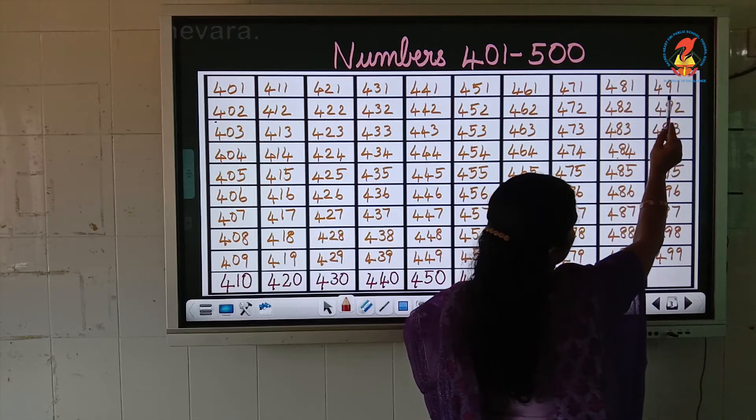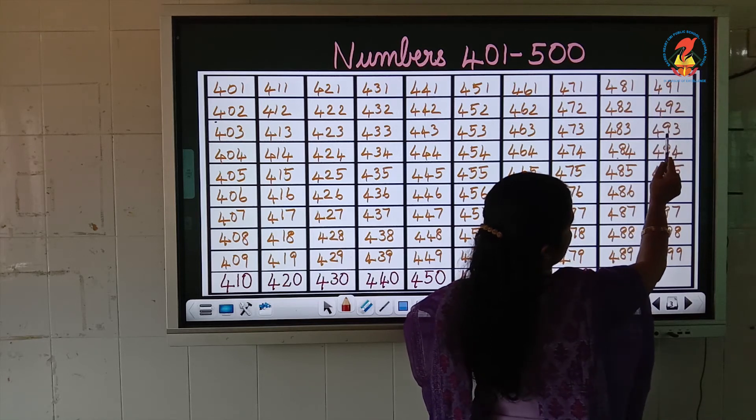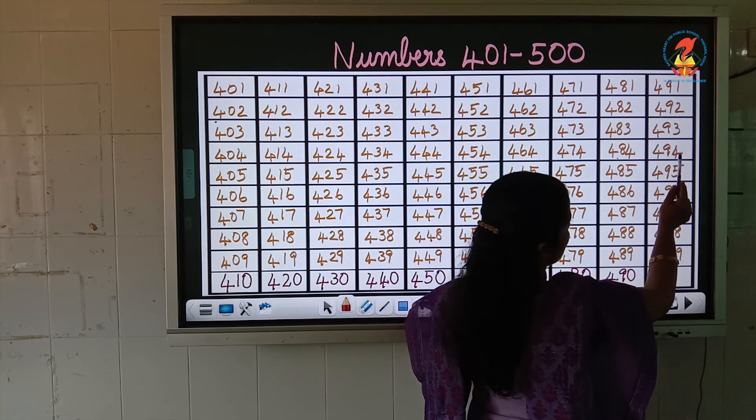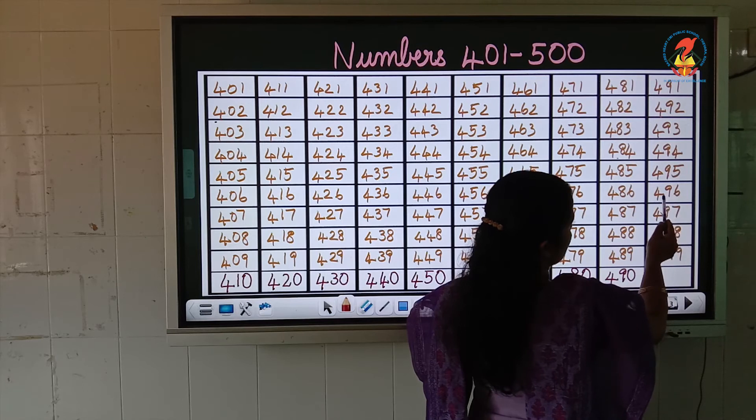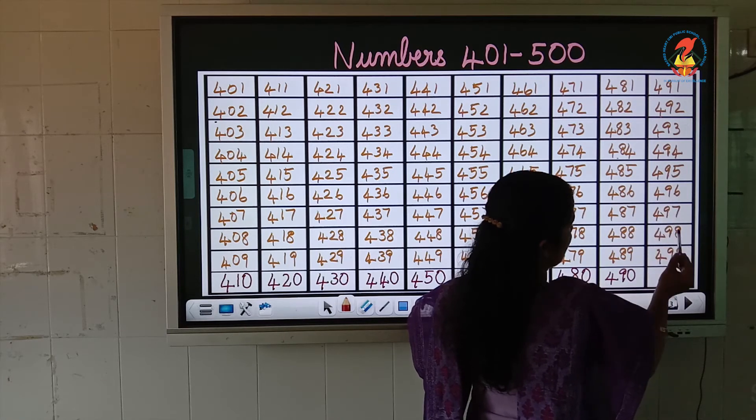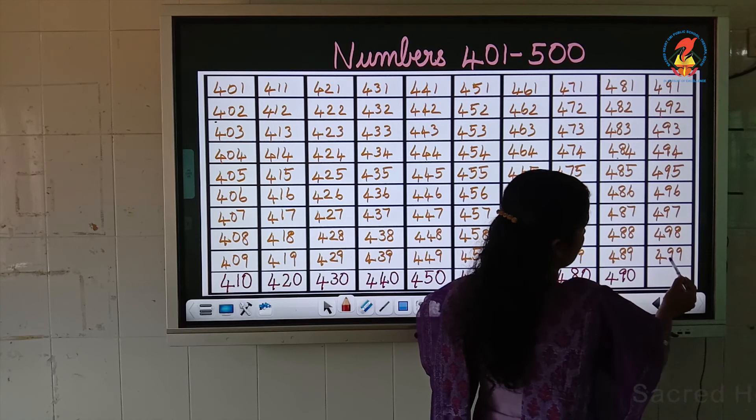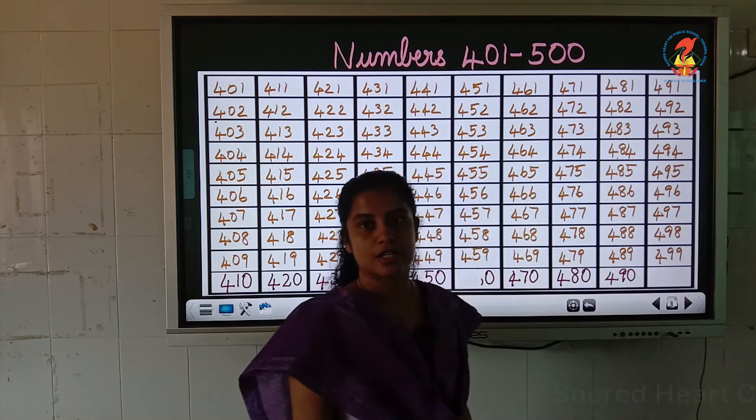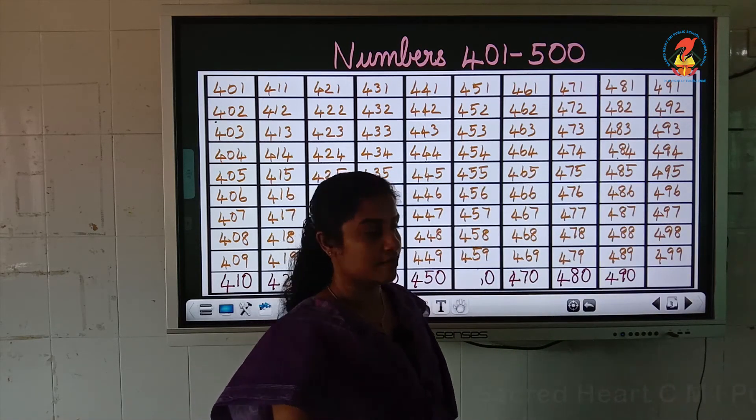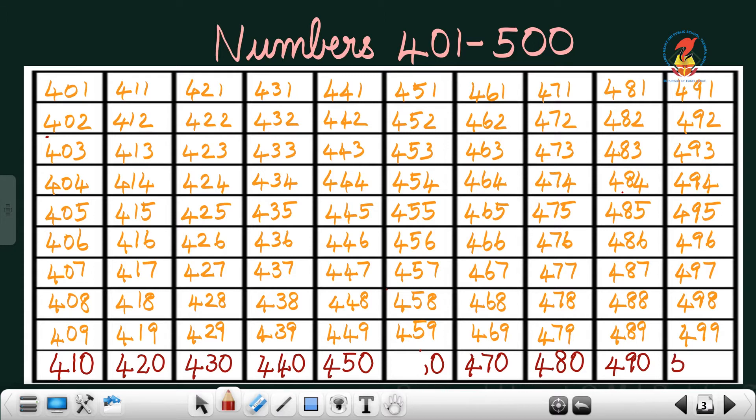After 490, 491, 492, 493, 494, 495, 496, 497, 498, 499. What comes after 499? 500. 5, 0, 0. Children, did you all understand? Now you studied numbers from 401 to 500.